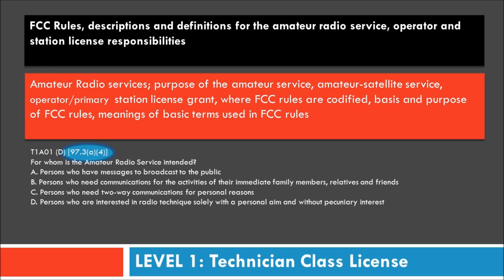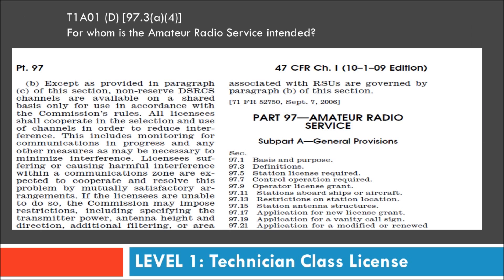This highlighted portion shows the actual section of the FCC rule book — Title 97 — where you can find the answer to this question. You can go to the internet to access it, and I'll have links on the website. This is the actual rules and regulations of the FCC that govern amateur radio service. Section 97.3 refers to definitions.